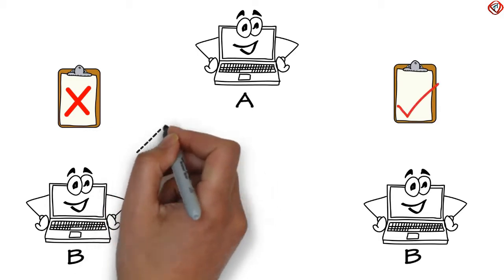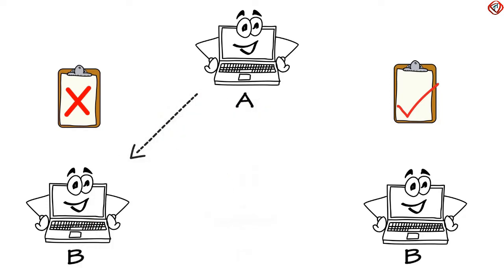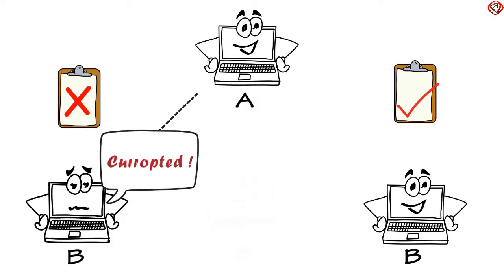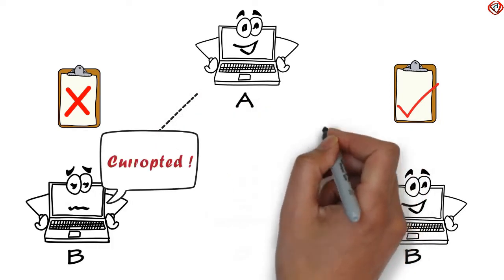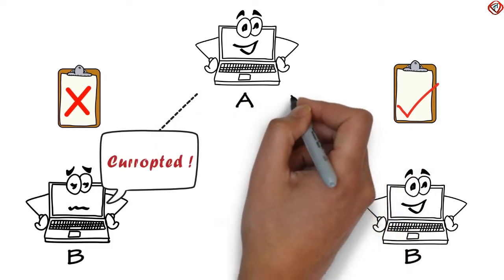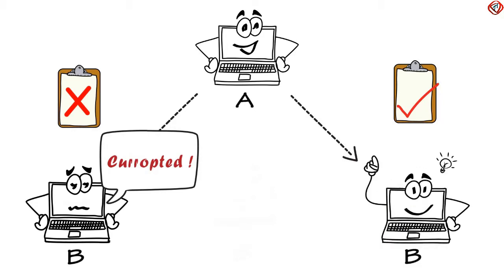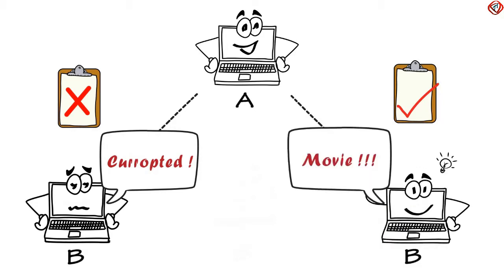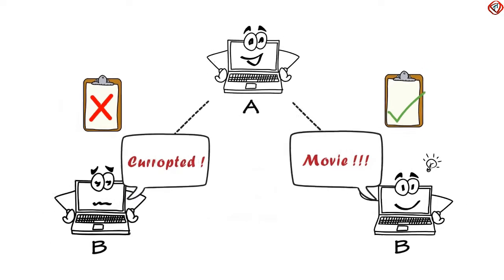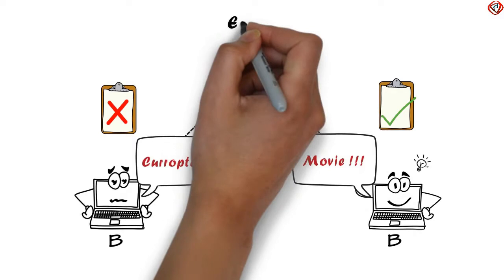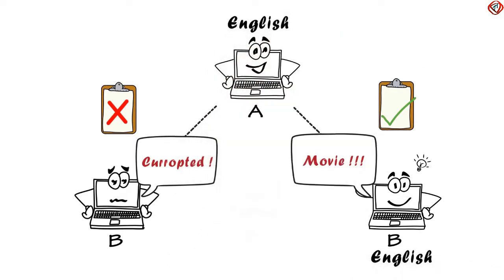In the first case, Computer B will pop up a message saying the file is corrupted. On the other hand, in the second case, Computer B would be able to understand this file as a movie. Data transfer in the second case is successful because both computers followed some guidelines — it is like both computers decided to speak English, instead of one speaking English and the other speaking Spanish.